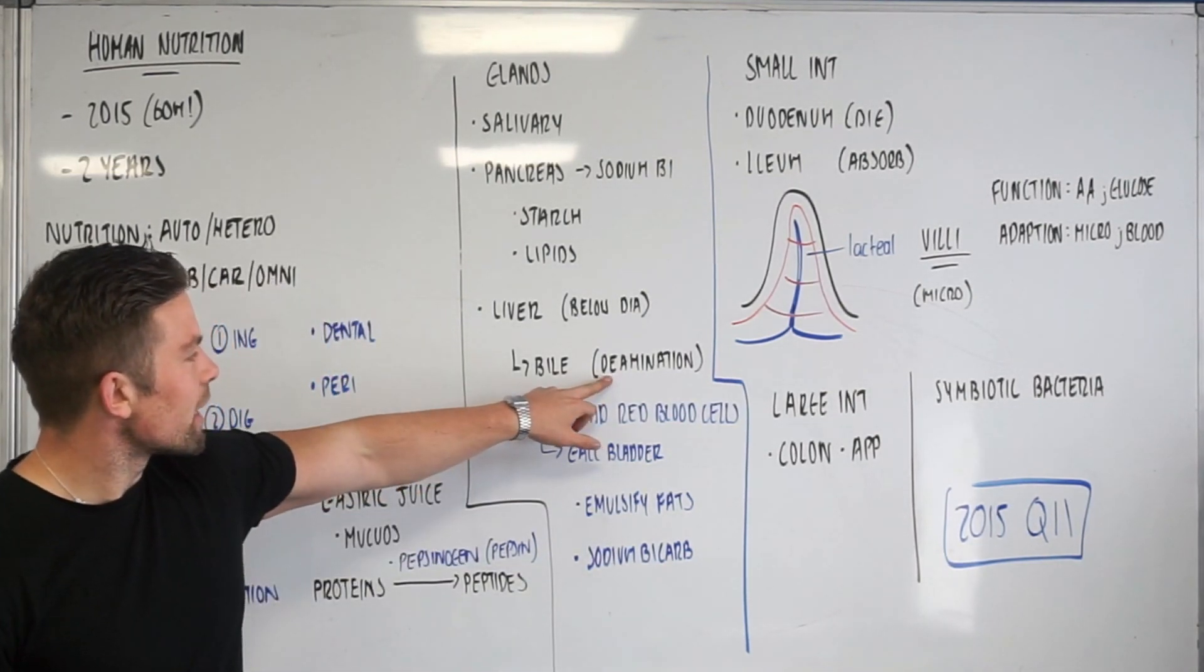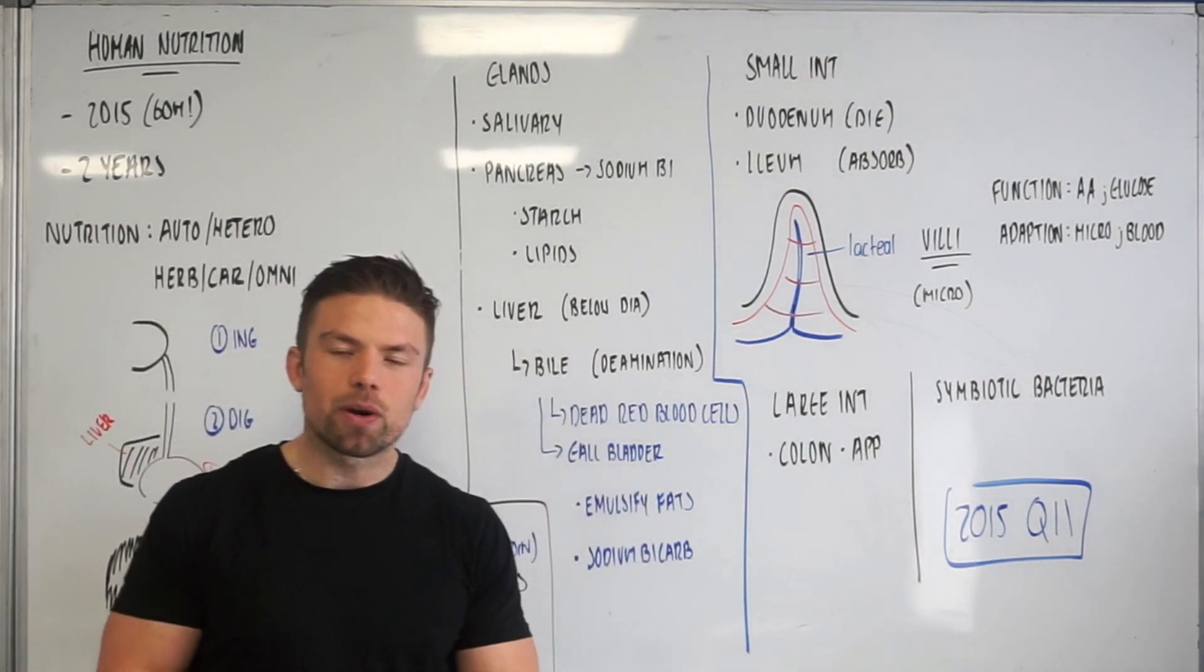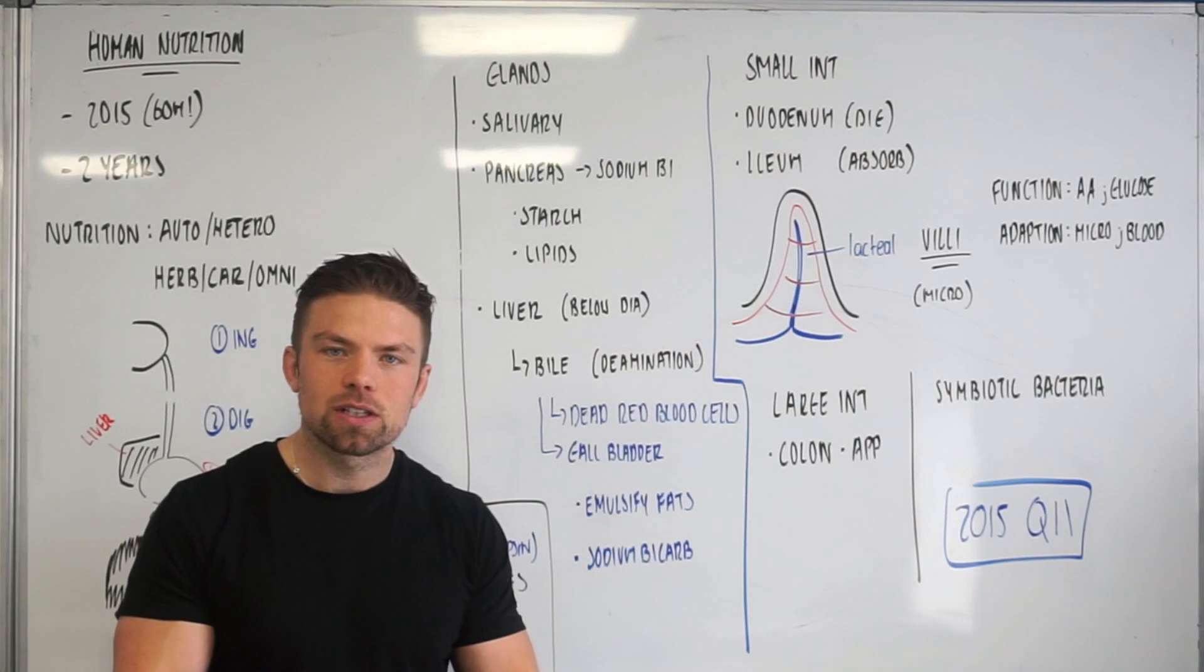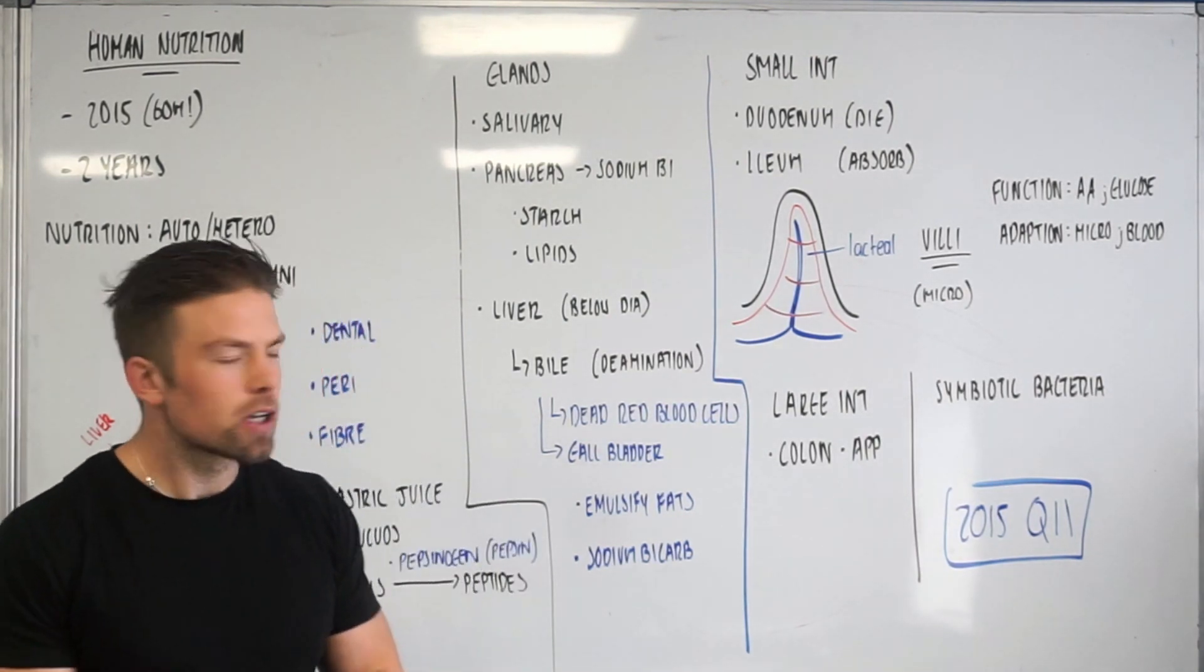Here when I have deamination, the liver is responsible for deamination which is where we actually break down excess amino acids. So we can't actually store amino acids in our body the way we can other stuff, so the liver is responsible for actually breaking them down.